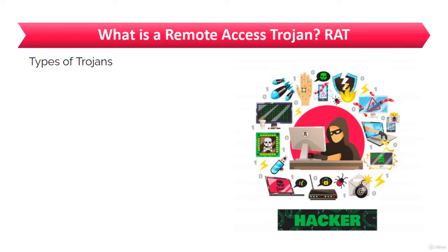In the last lecture, we saw what Trojans are and had a brief introduction about them. In this lecture, we will see different types of Trojans and how they work. Before moving ahead with the types, let us first see an example of how a Trojan can affect a system.